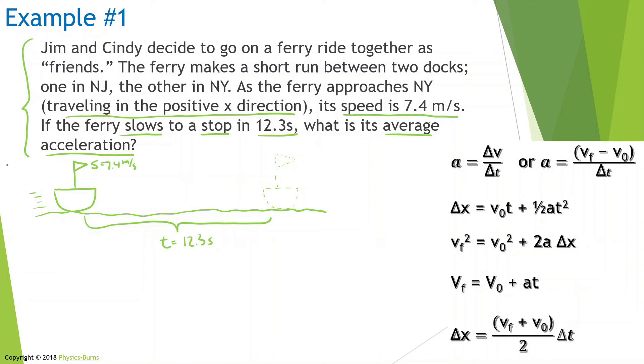What we're looking for here is we want to find what the acceleration is as it slows to a stop. So remember what I said: we need to list our knowns and we need to list our unknowns. We have the speed at the beginning, 7.4, then the time it takes to get to the other side, 12.3 seconds, and the acceleration, which we don't know—that's what we're looking for.